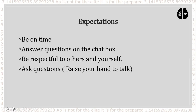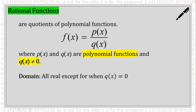So what is a rational function? It's a function — a polynomial to be exact — with a polynomial in the numerator and a polynomial in the denominator. Something to remember about a fraction is that you can't divide by zero. Therefore, q(x) cannot be equal to zero, or else you'll have vertical asymptotes. Your domain will be all real numbers except for whatever causes q(x) to equal zero.